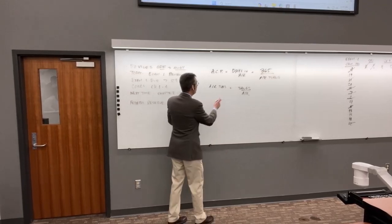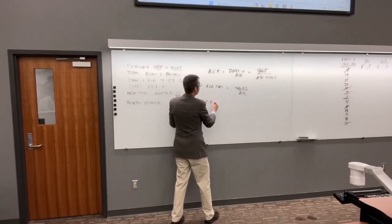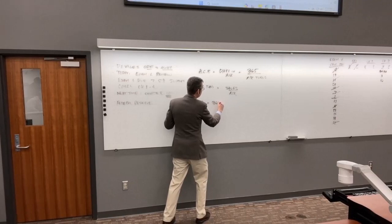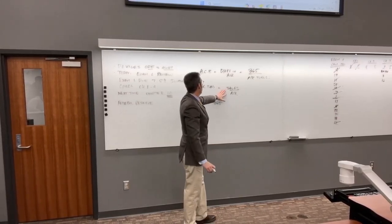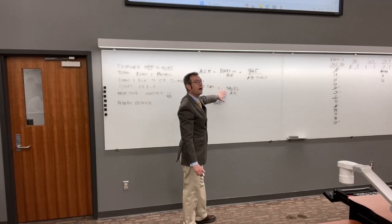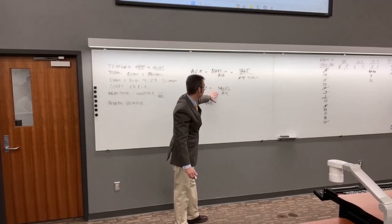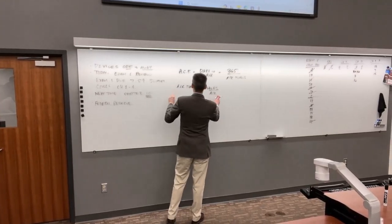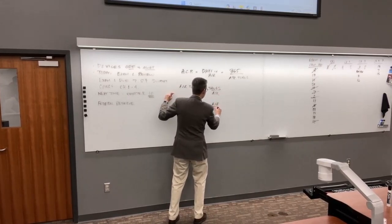Rearranging: average collection period equals 365 times AR divided by sales. Dividing by an AR-turnover fraction means multiplying by its inverse. So we end up with 365 times AR over sales.